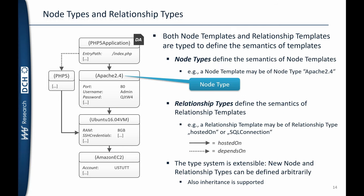TOSCA builds on a strong typing system. For example, it defines node types and relationship types. Node types define the semantics of node templates — for the Apache 2.4 node template, the Apache 2.4 node type defines its semantics, which means its properties. Similarly, relationship types define the semantics of relationship templates. For example, this relationship template defines that the PHP 5 application should be hosted on the Apache 2.4 web server, and this dashed arrow defines that the PHP 5 application also depends on the PHP 5 runtime in order to run.